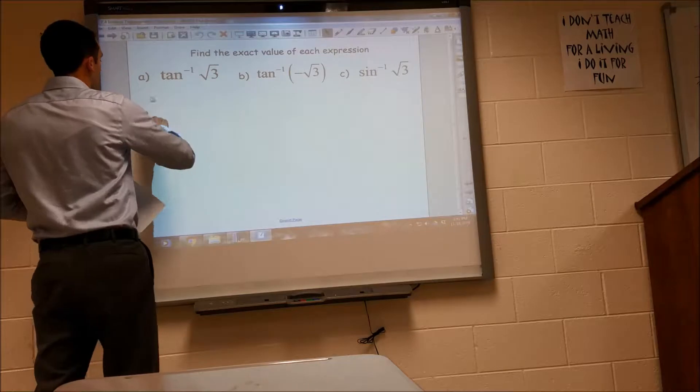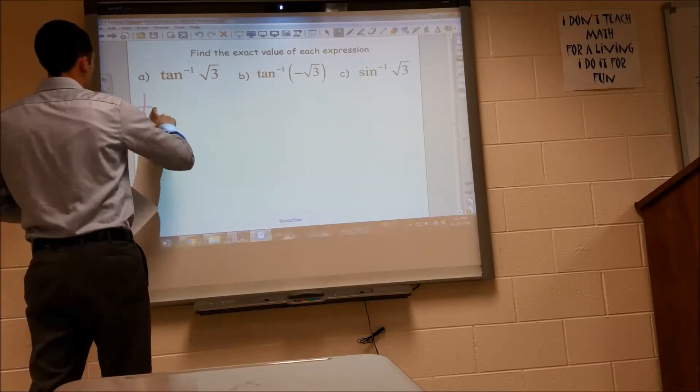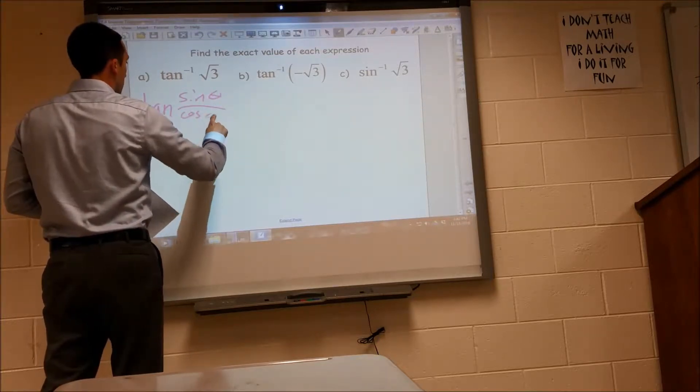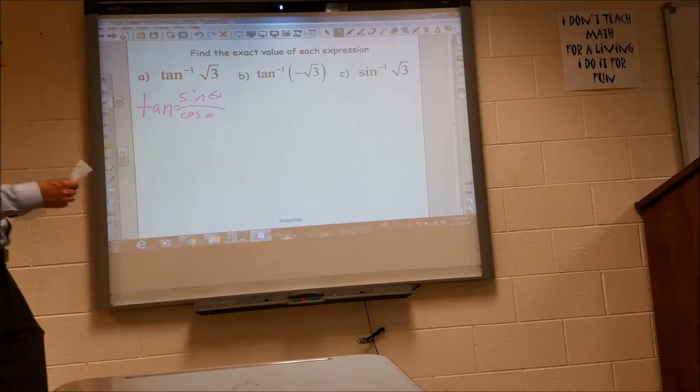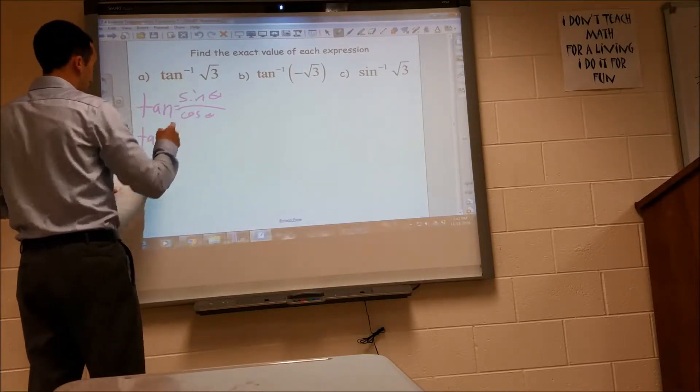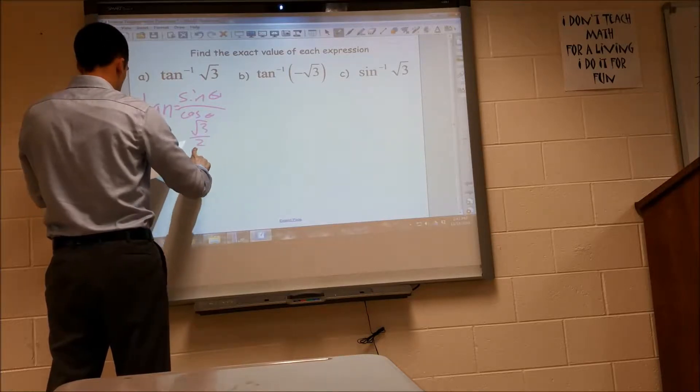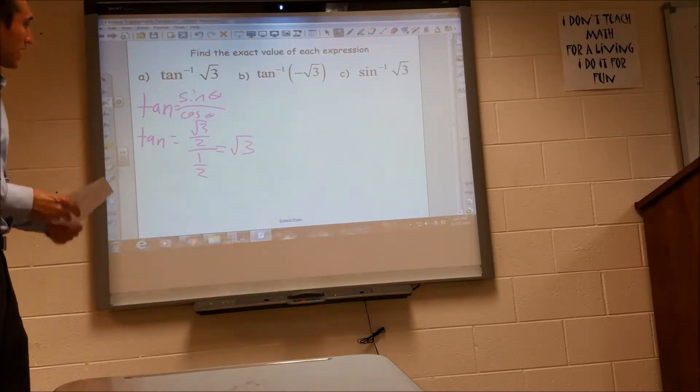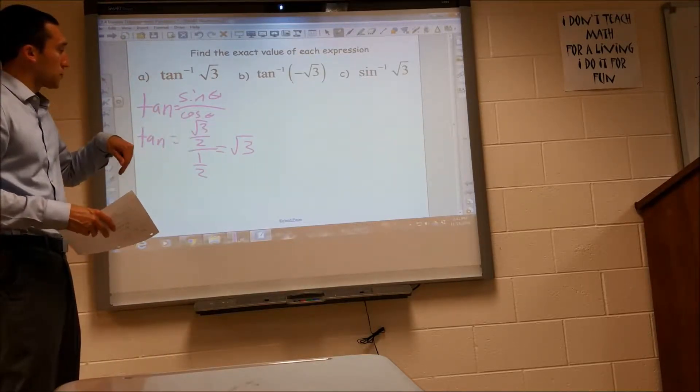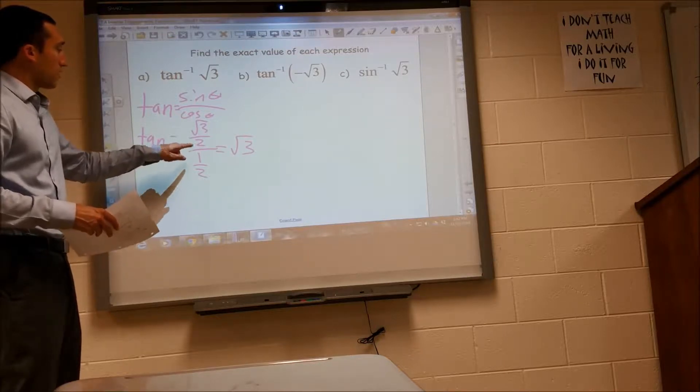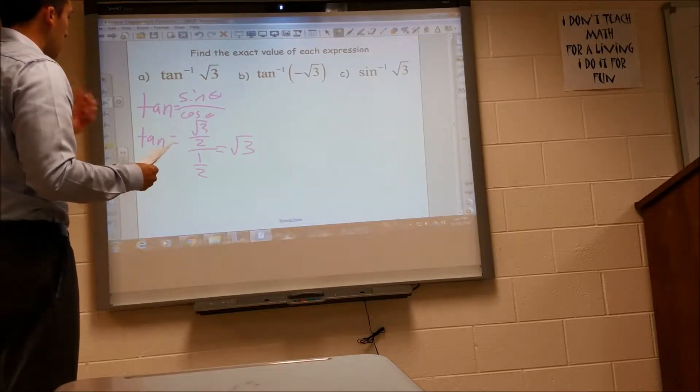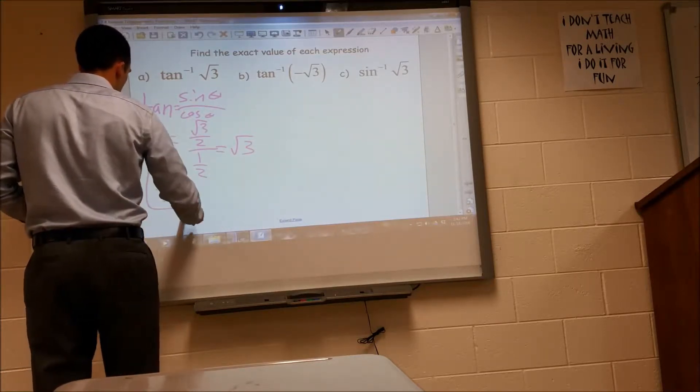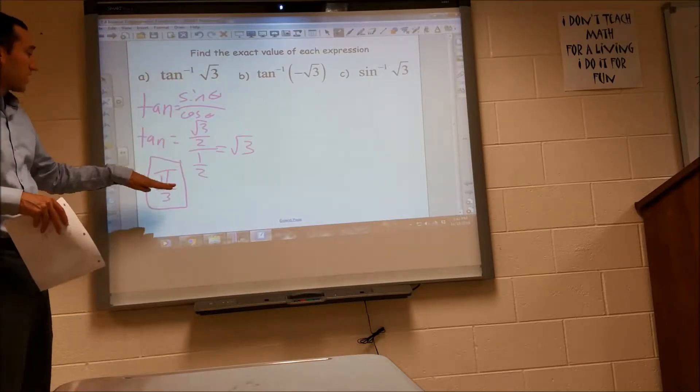we know that tangent is sine over cosine. And the values that will simplify to radical 3 is radical 3 over 2 divided by 1 half. That gives me radical 3 if you flip and multiply. And the angle that gives me radical 3 over 2 for sine and 1 half for cosine is pi over 3. So the inverse tangent of radical 3 is pi over 3.